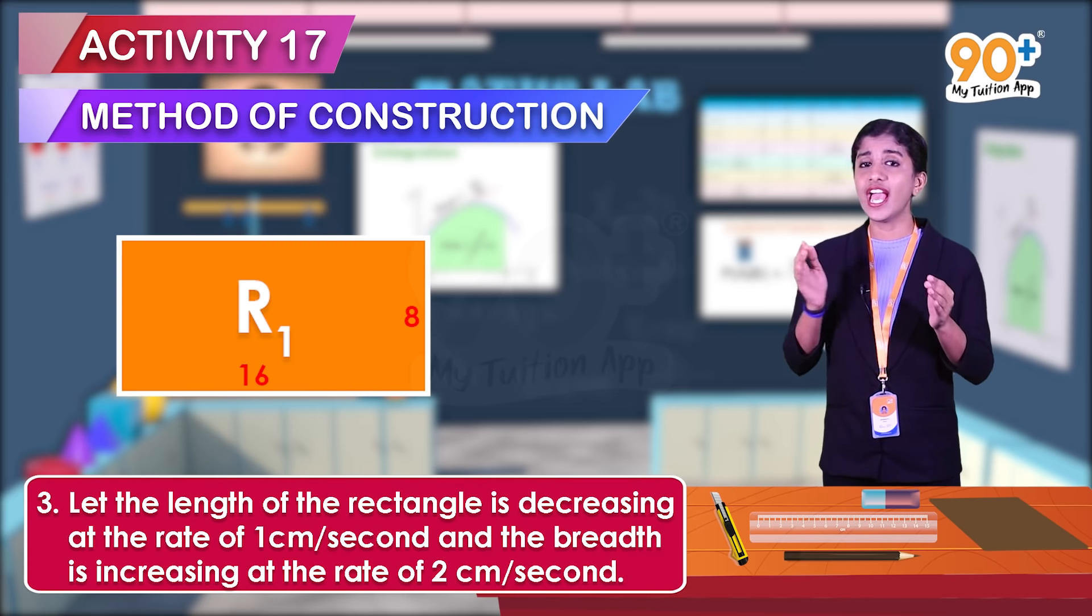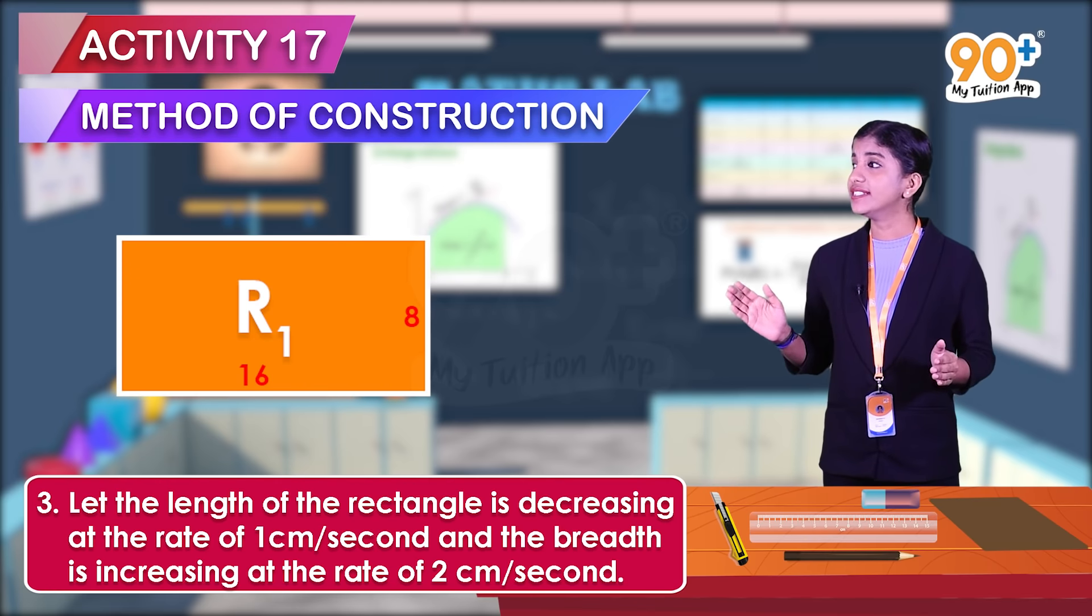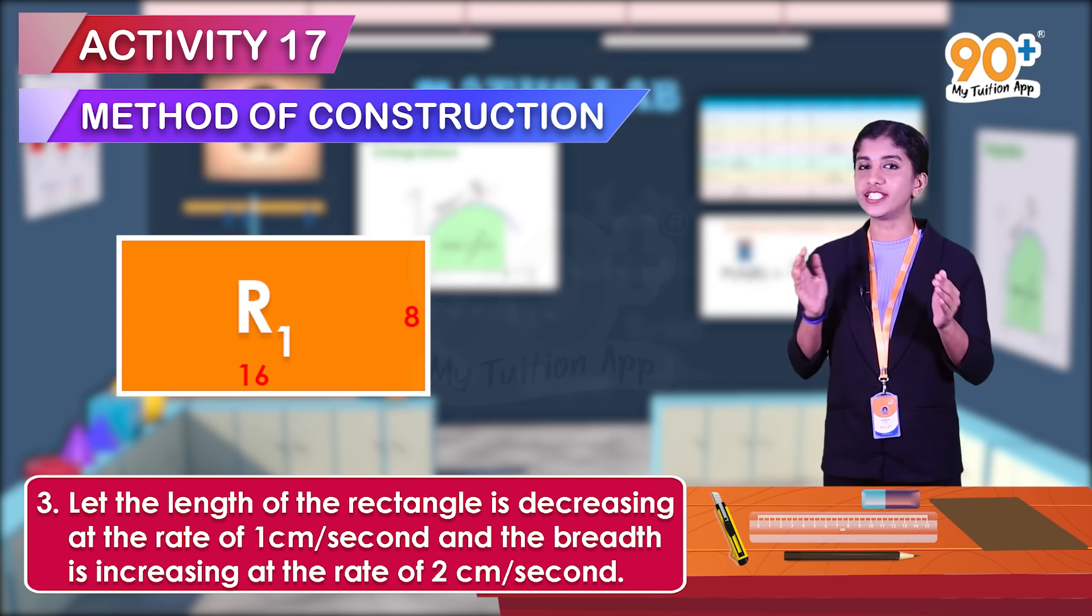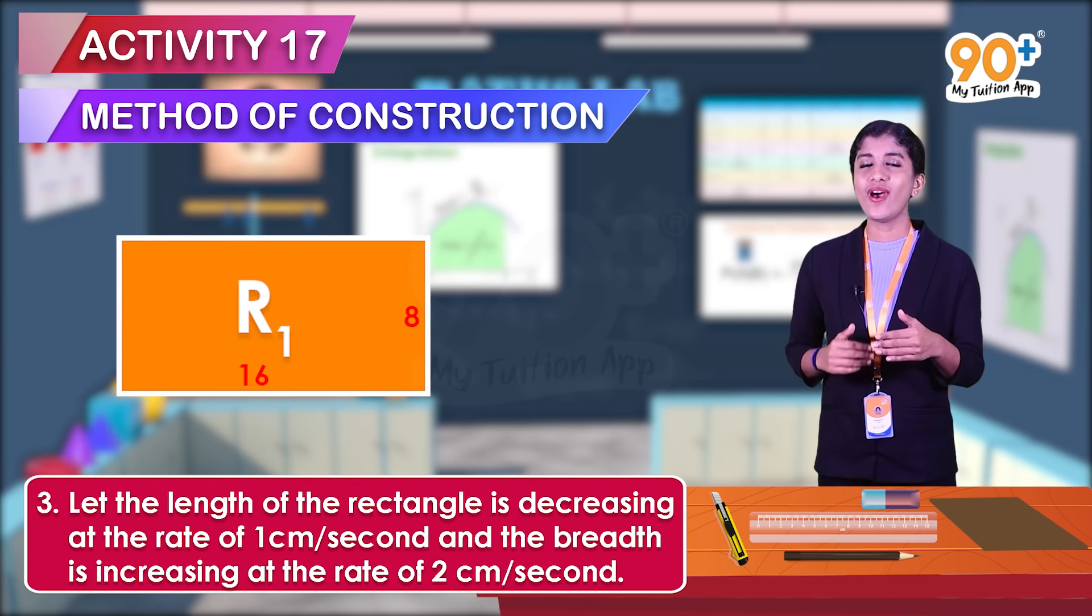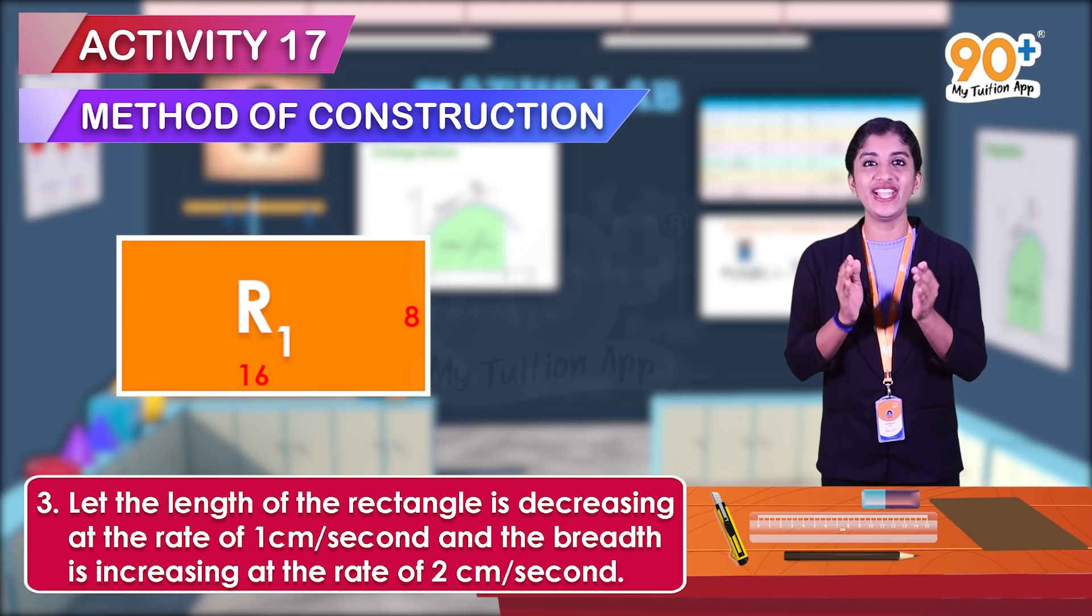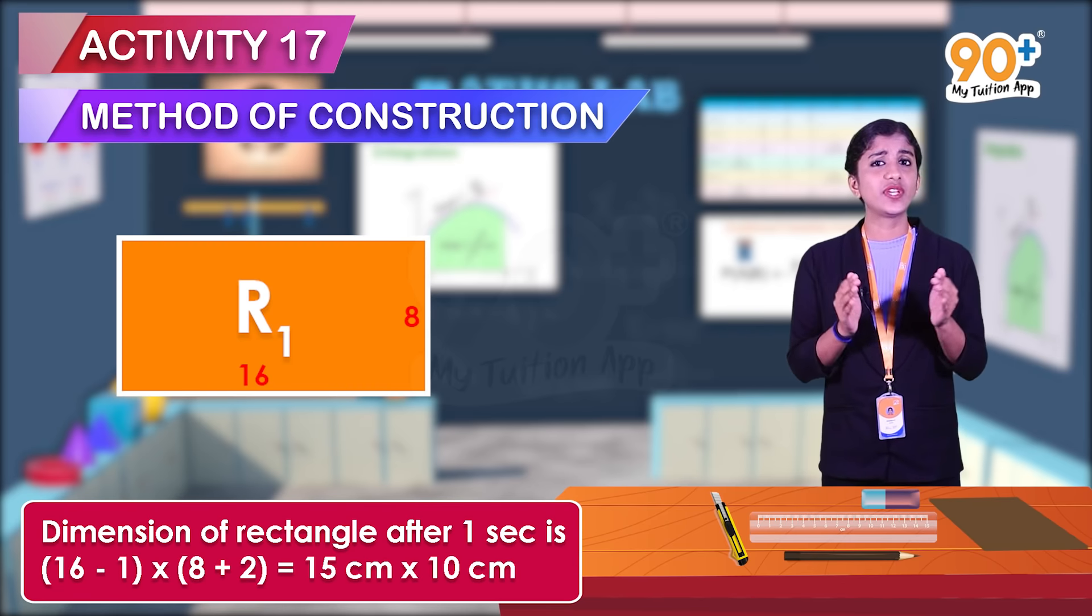Let the length of the rectangle be decreasing at the rate of 1 centimeter per second and the breadth is increasing at the rate of 2 centimeter per second. So after each second we get rectangles of different dimensions. The dimension of the rectangle after 1 second is 16 minus 1 into 8 plus 2, which is equal to 15 centimeter into 10 centimeter.